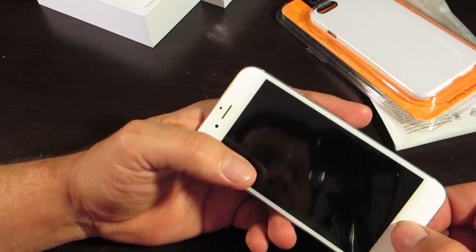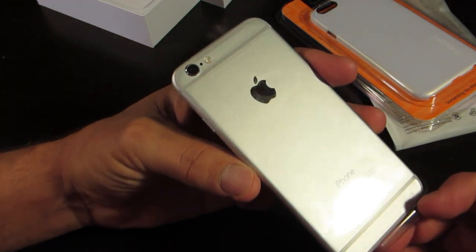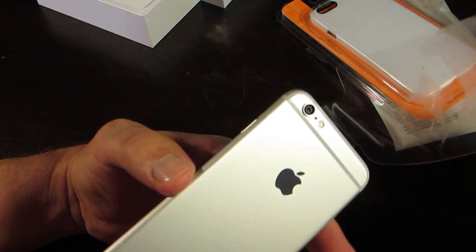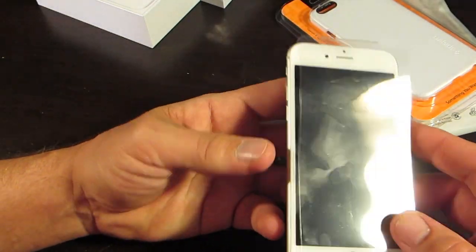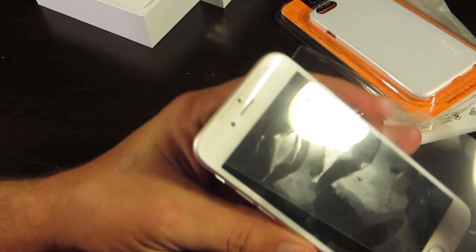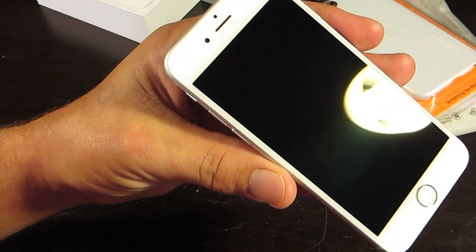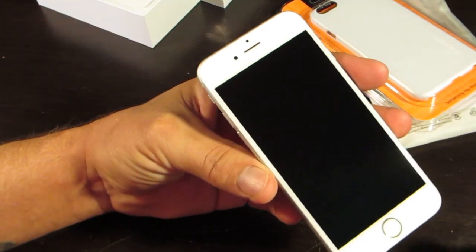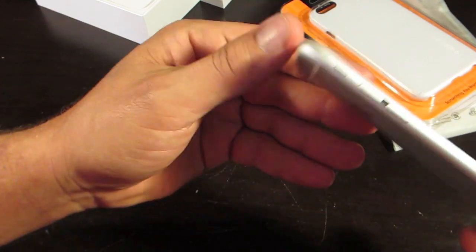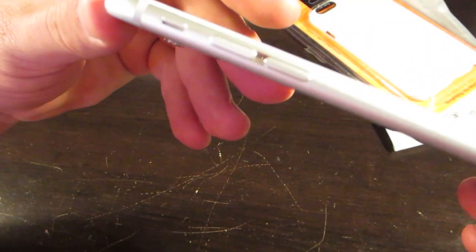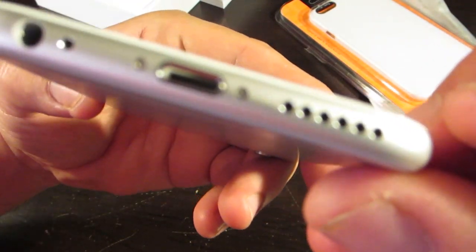Now, without further ado, this is my favorite part of unboxing a phone is peeling this off. Ooh! Let me get the little screen switch. Ah, there you go. Cool beans. There you go. There it is in all of its loveliness. The Apple iPhone 6.